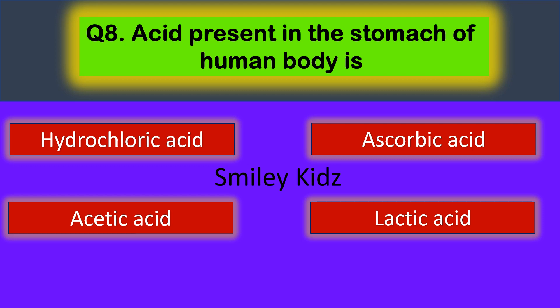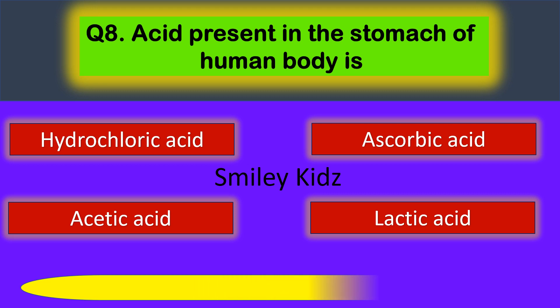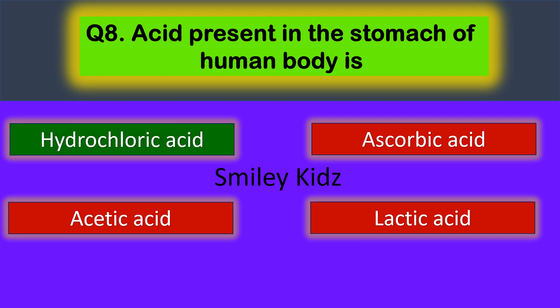Question number eight: the acid present in the stomach of the human body is? Your options are hydrochloric acid, ascorbic acid, acetic acid, and lactic acid. Your time starts now. Your time is up. The correct answer is hydrochloric acid.